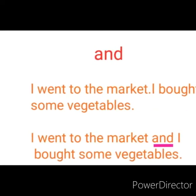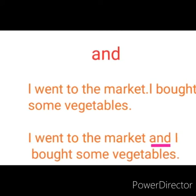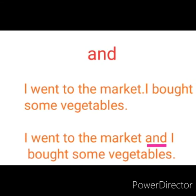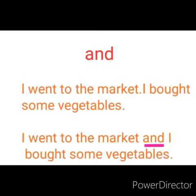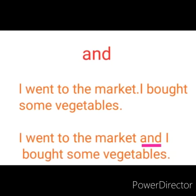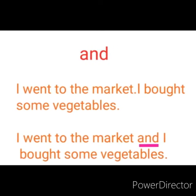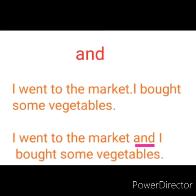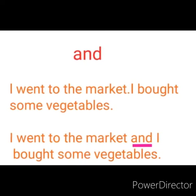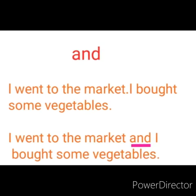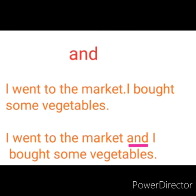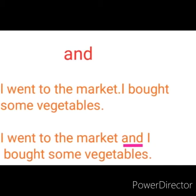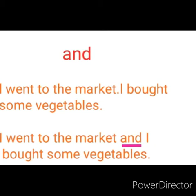Now one more example. 'I went to the market.' 'I bought some vegetables.' So how many sentences are there? Two sentences. Now by using the joining word 'and' we are going to make it one: 'I went to the market and I bought some vegetables.' It starts with a capital letter and ends with a full stop — it is only one sentence now.